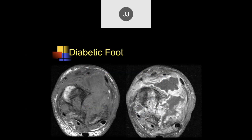Here's another example on T1-weighted images where it looks like phlegmon — it's hard to tell how much is abscess versus phlegmonous tissue. When you give contrast, you can clearly see that there's a huge amount of pus collection within the soft tissues.